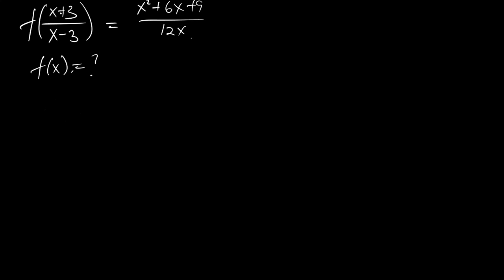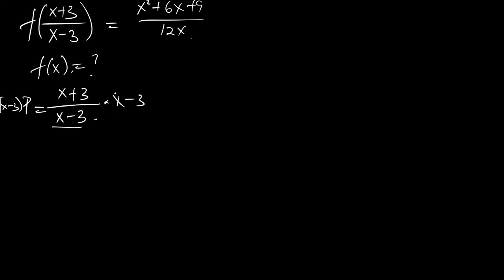For us to do that, let's assume the whole of this is p. So we say p is equal to (x plus 3) divided by (x minus 3). Now let's make x the subject of formula. We multiply both sides by x minus 3, so this x minus 3 will cancel out. We now have (x minus 3) times p is equal to x plus 3.